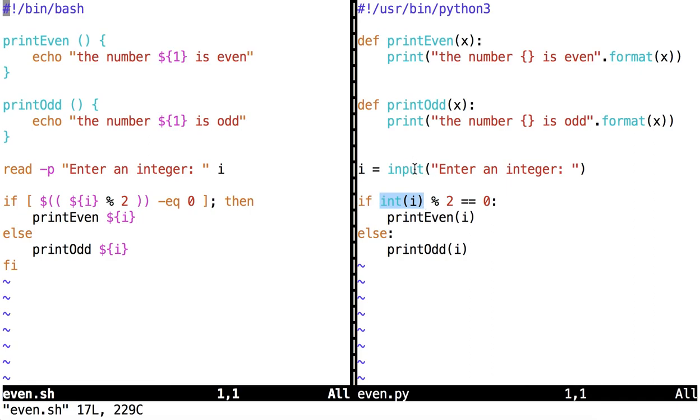I had to do it because this function input returns a string. So if the user inputs the integer of 4, it does not assign a numeric value of 4 to i. Instead, a string value is assigned to i. So at this point, I'm casting that string value to an integer so that it can be evaluated with modulo.